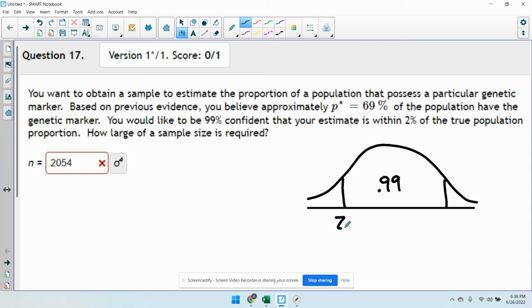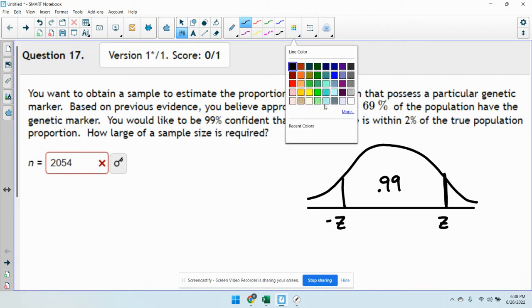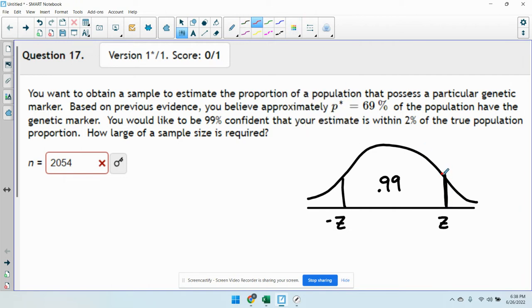So I'm looking for this negative and positive, well really just the positive Z here. So when I go to my Z inverse normal in the calculator, I need to put the area to the left of this Z value.